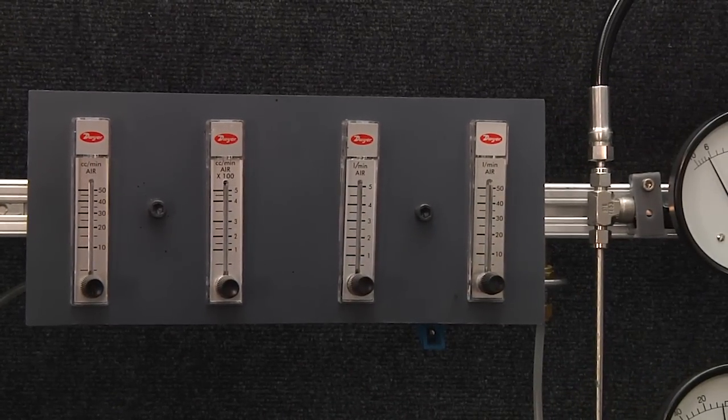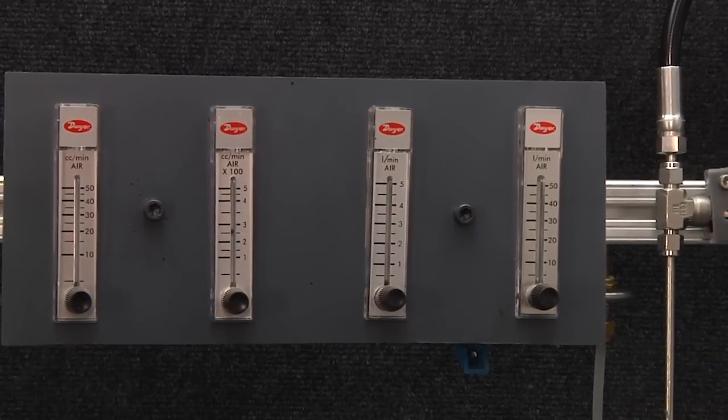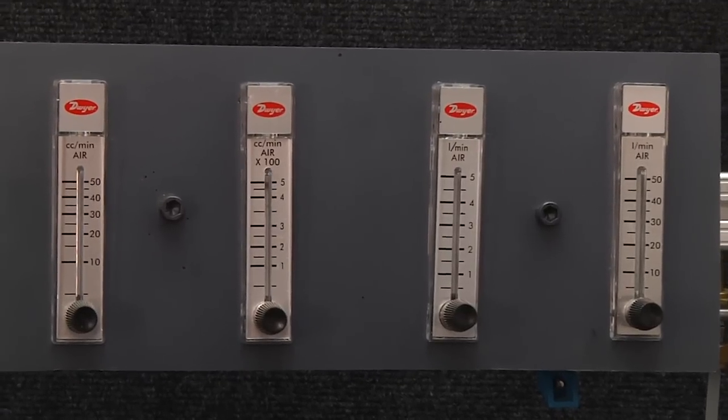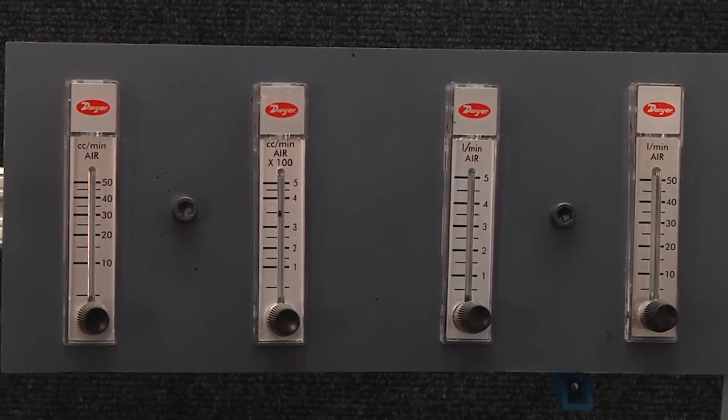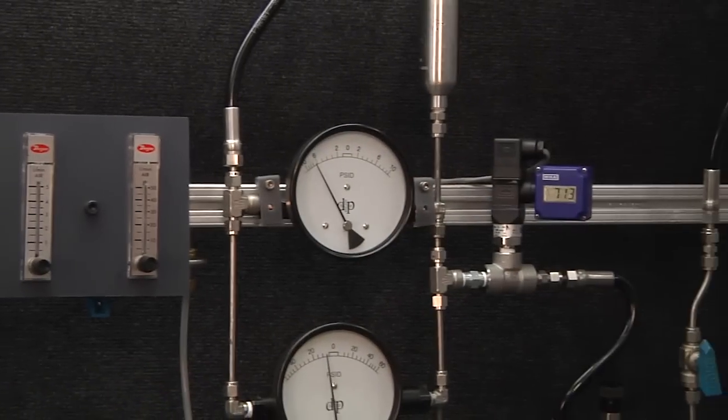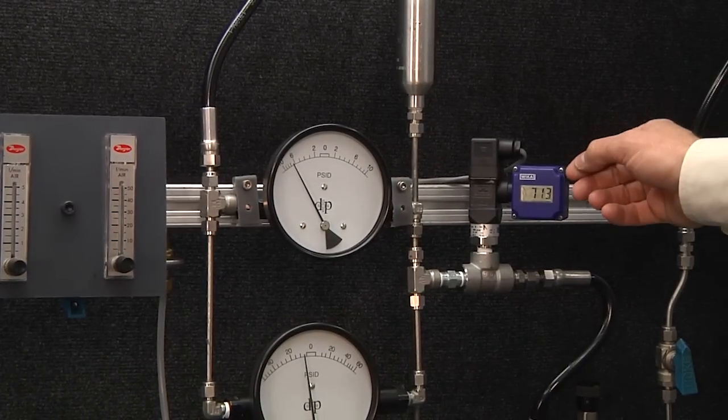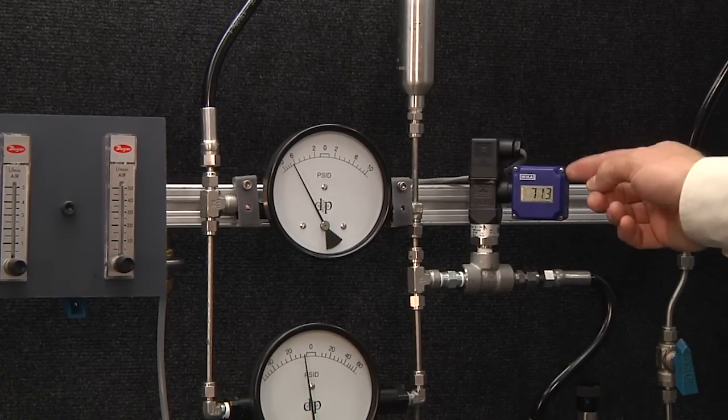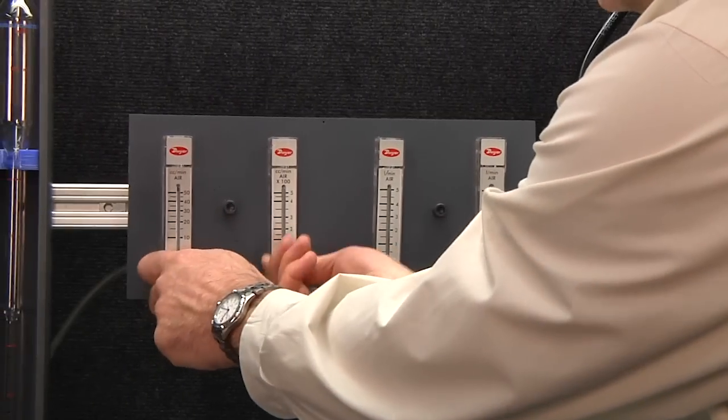I'm going to adjust the needle valve and try to get it in the three to four hundred cc's per minute range. There we are, and again we're still seven psi above the pilot set point and at 713 psi on the inlet. So widely varying flow rate changes.